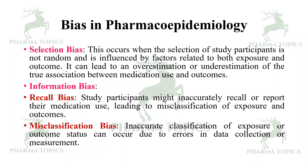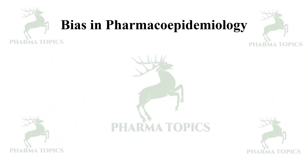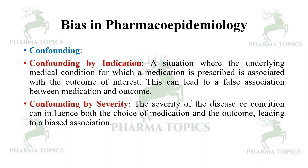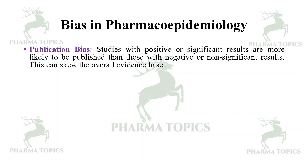Misclassification bias involves inaccurate classification of exposure or outcome status due to errors in data collection or measurement. Confounding by indication is a situation where the underlying medical condition for which a medication is prescribed is associated with the outcome of interest, leading to a false association. Confounding by severity occurs when the severity of a disease influences both the choice of medication and the outcome, leading to a biased association. Publication bias occurs when studies with positive results are more likely to be published than those with negative results, skewing the overall evidence base.